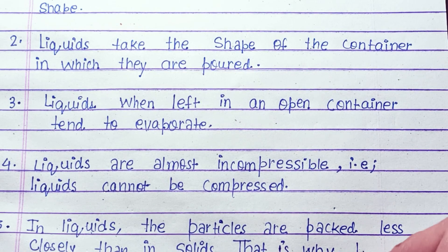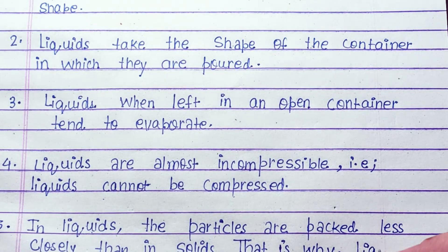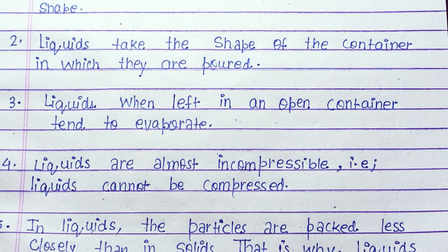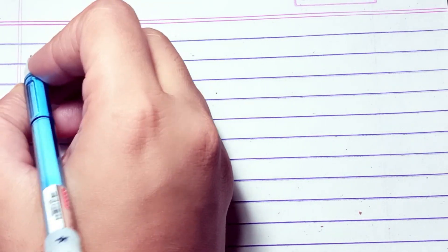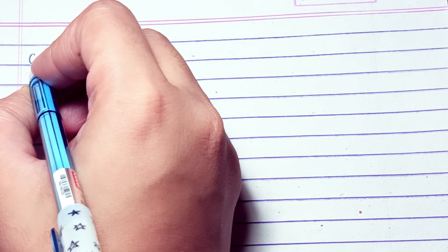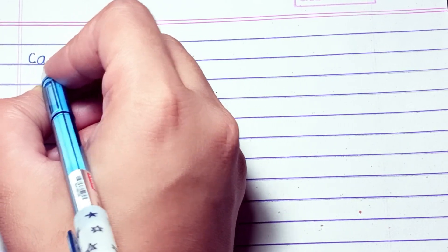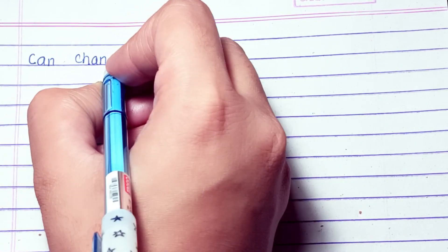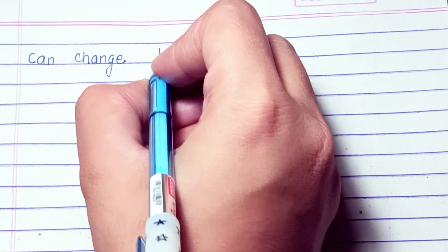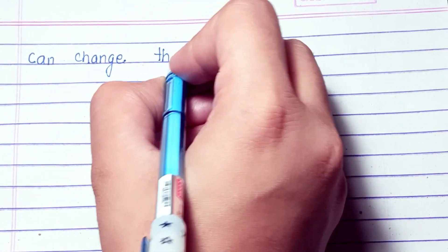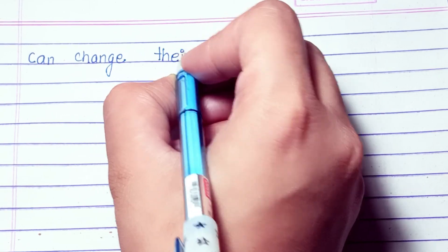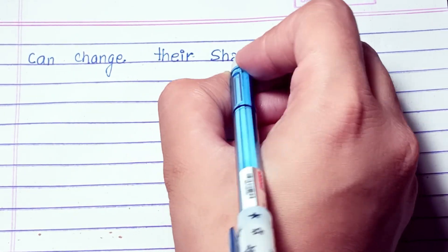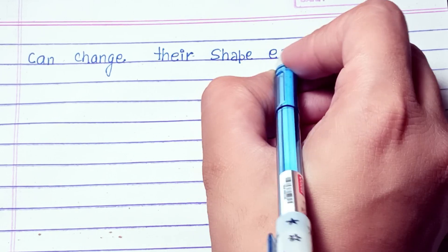In liquids, the particles are packed less closely than in solids. That is why liquids can change their shape easily.